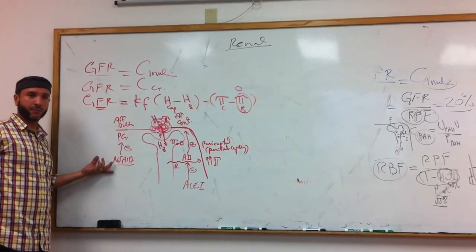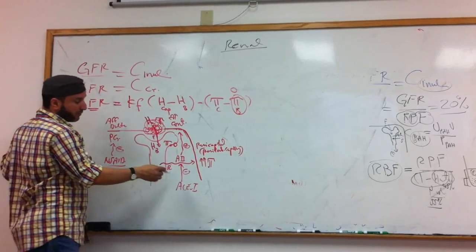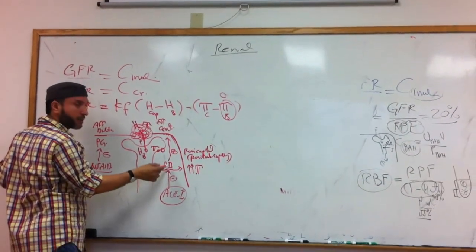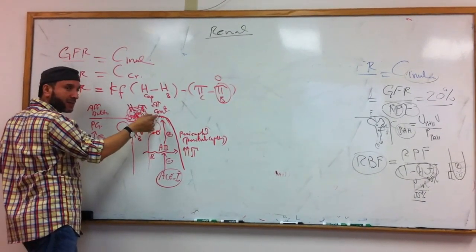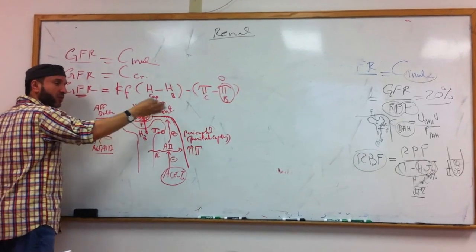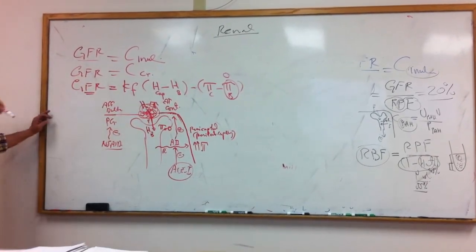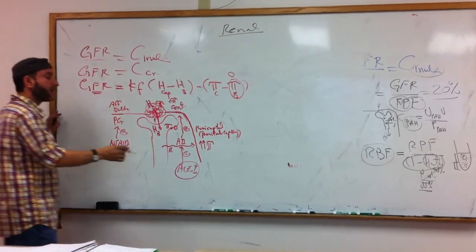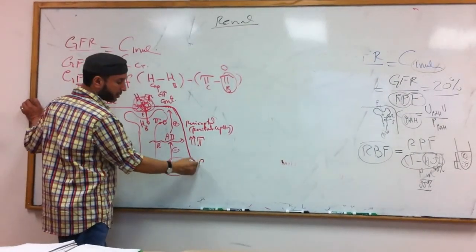Analgesic use — no problem there. Now, ACE inhibitors: we said this will inhibit angiotensin II, so it will dilate the efferent. Once you dilate the efferent, you facilitate the movement of blood away from the glomerulus. This will reduce filtration. This has two effects — one is good.